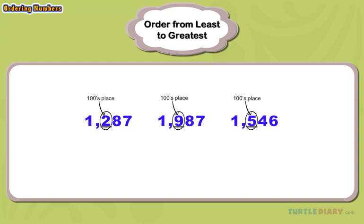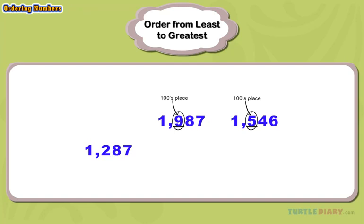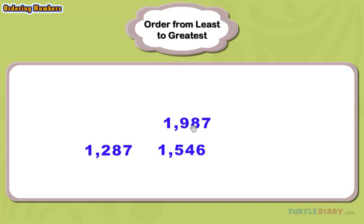Now we can begin to order these numbers from least to greatest. We will order the number that has the smallest digit in the hundreds place first. We will write this number in the first blank space. If we look at the two remaining numbers, 1,546 is the next smallest number. So we'll write the numbers in order.